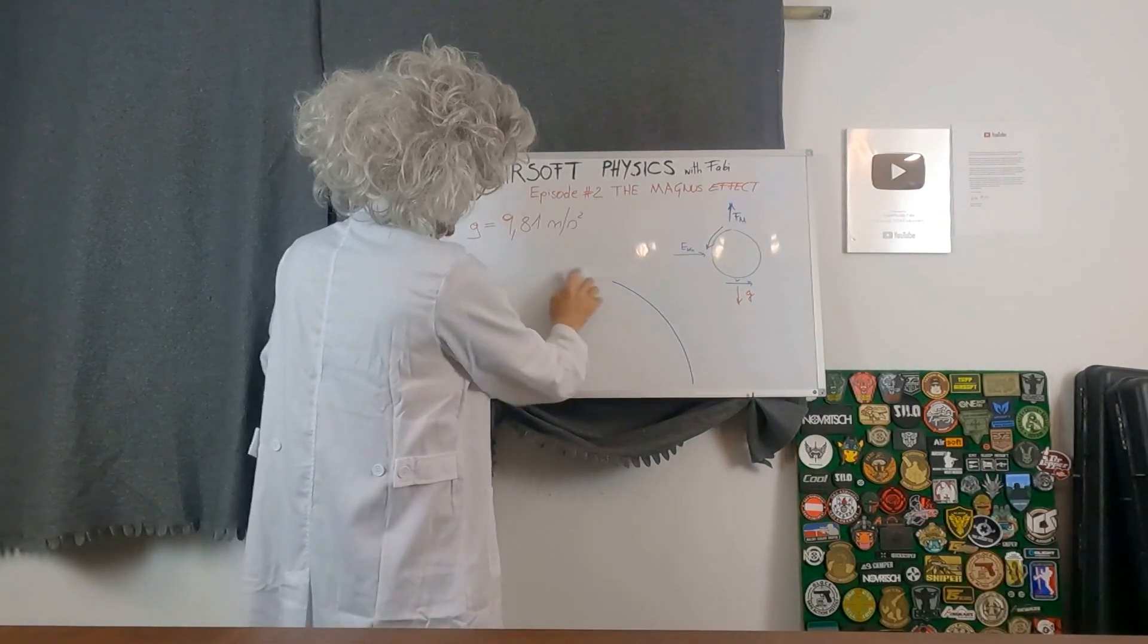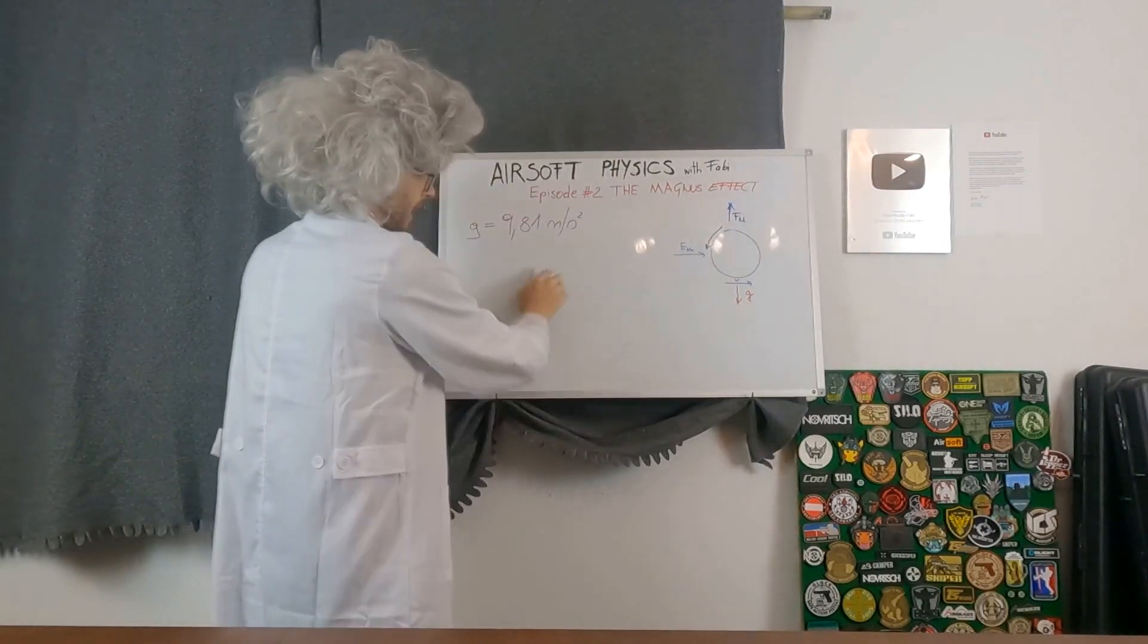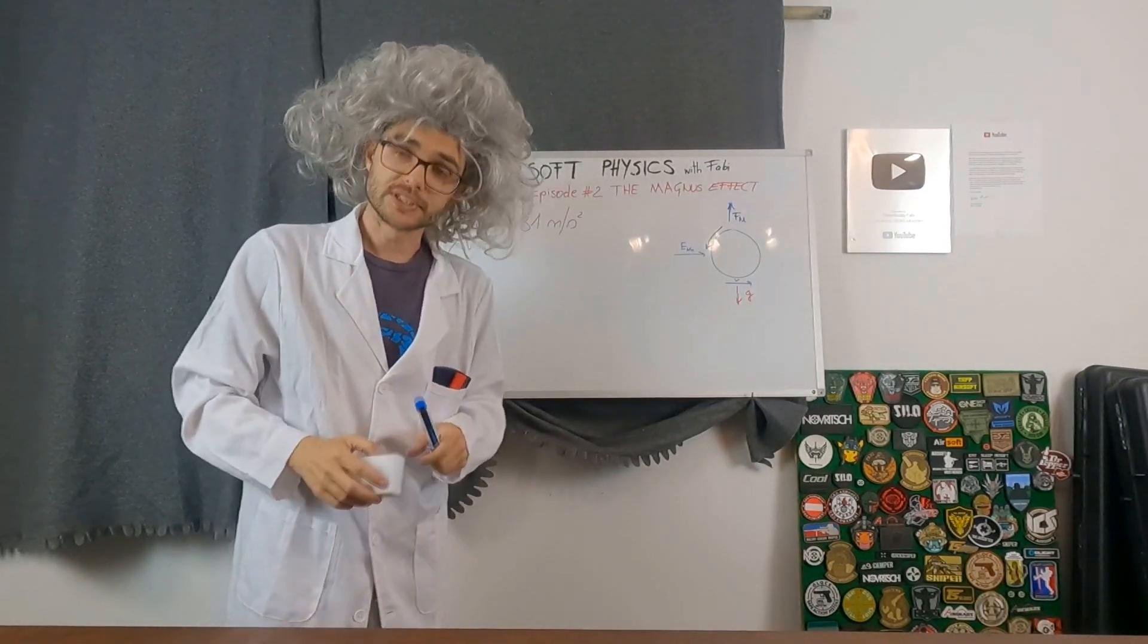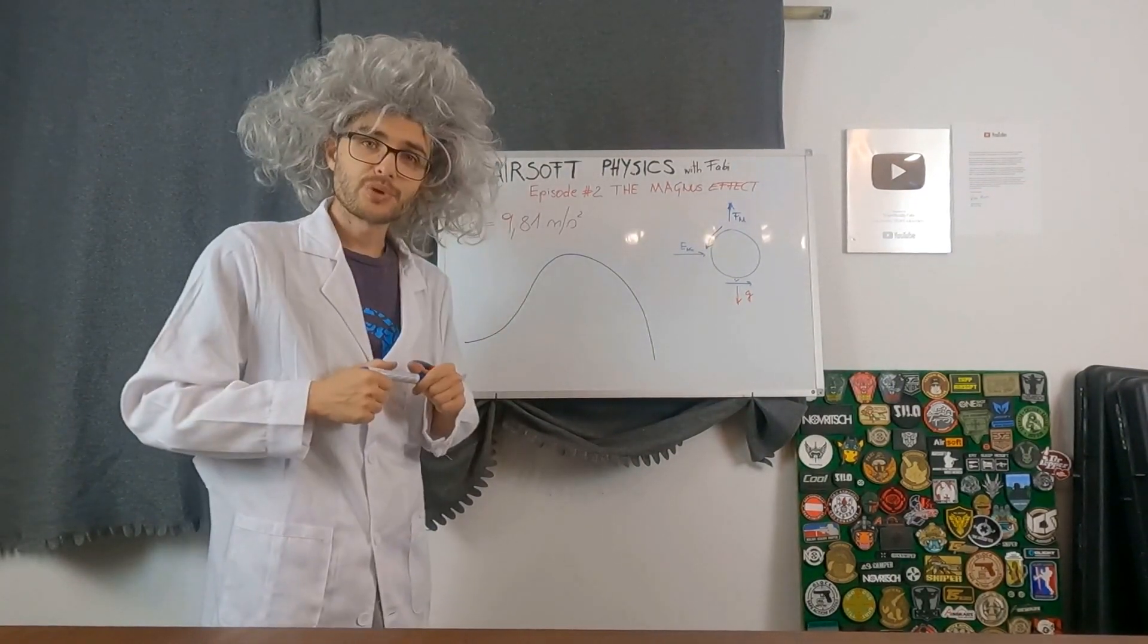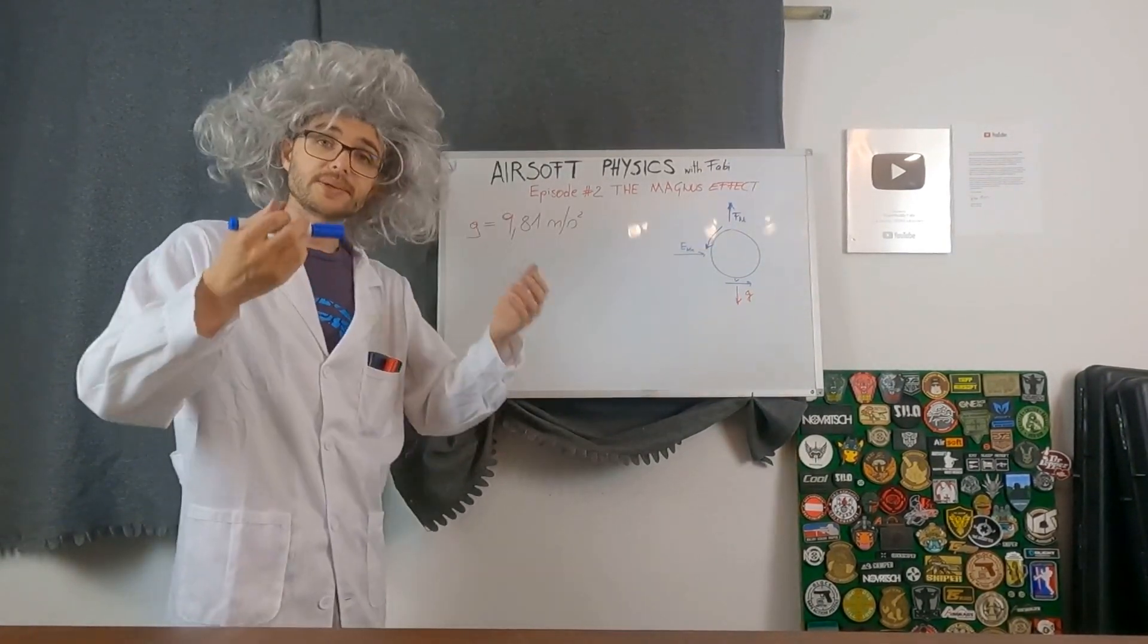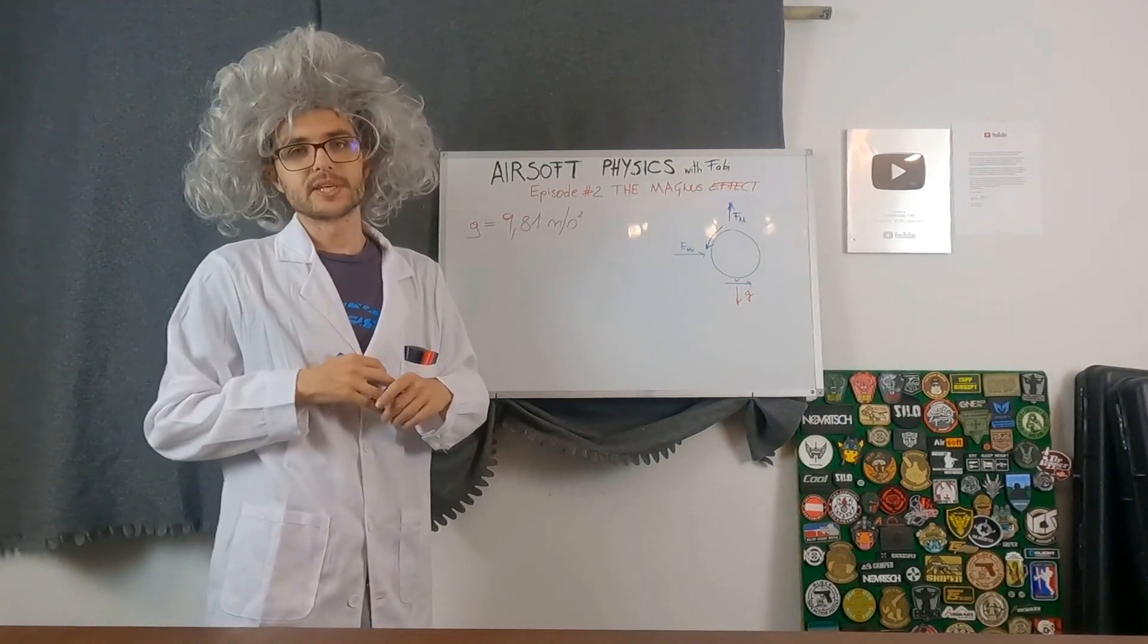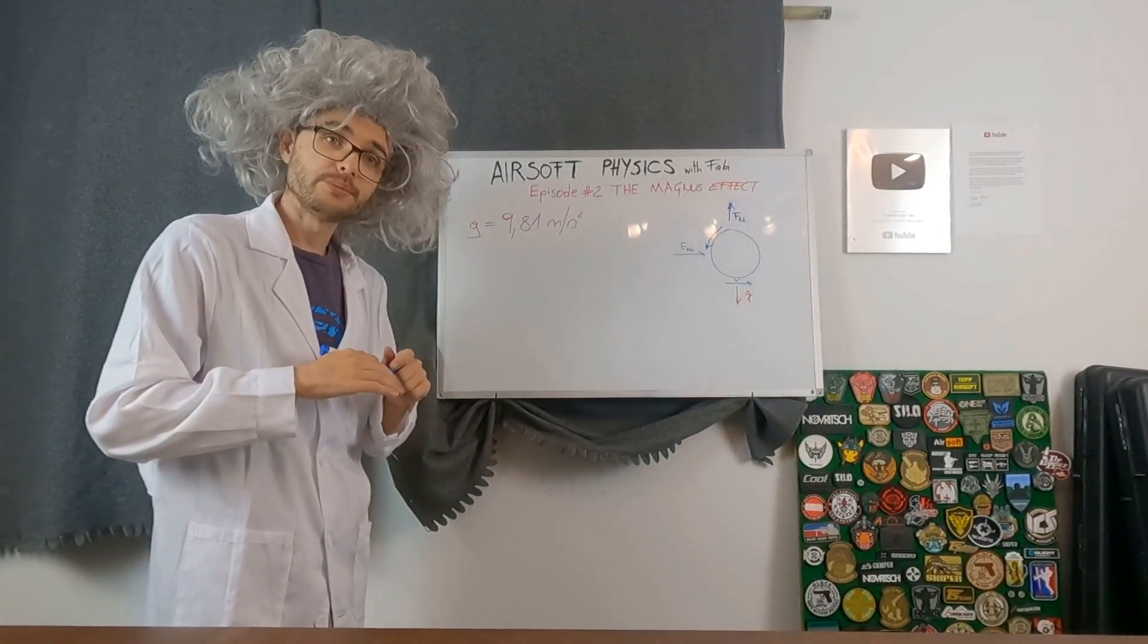Again, to achieve more range you can basically just add more Magnus force. But this will result in a curve more looking like that. Have fun trying to shoot somebody with this kind of BB curve. So the goal for your hop-up adjustment is to get as flat as possible trajectory.